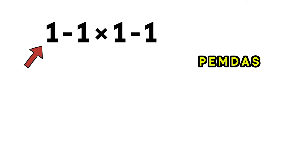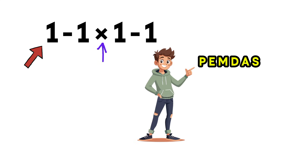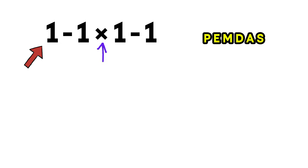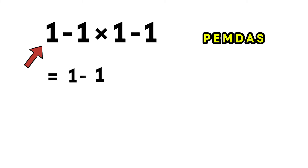Now, in this expression, we have two subtractions and one multiplication. And according to PEMDAS, multiplication comes before subtraction. So let's solve this step by step. First, we do the multiplication: 1 multiplied by 1 gives 1. So now our expression becomes 1 minus 1 minus 1.